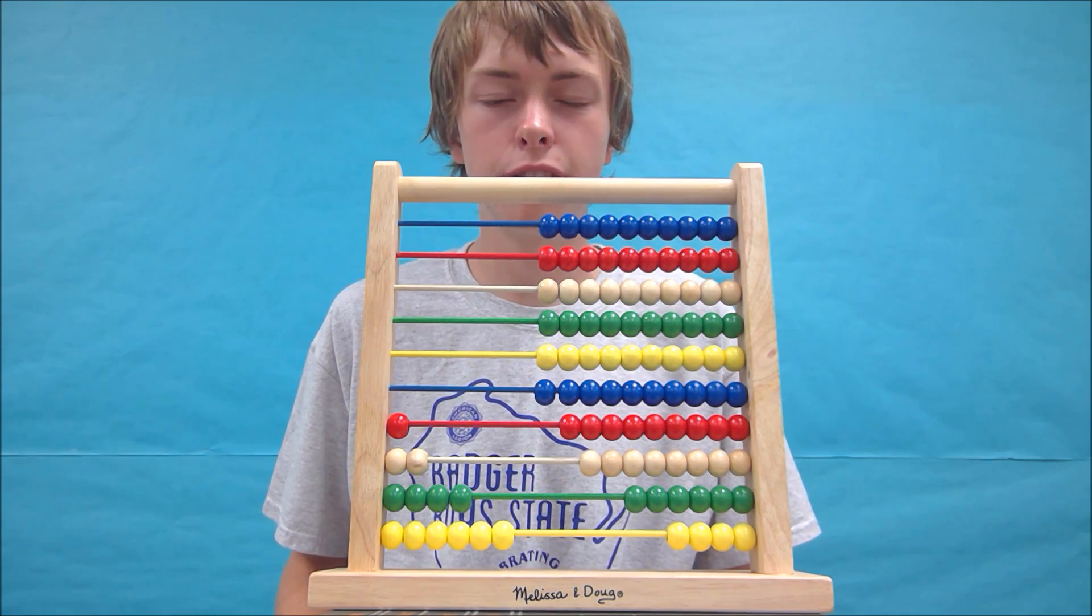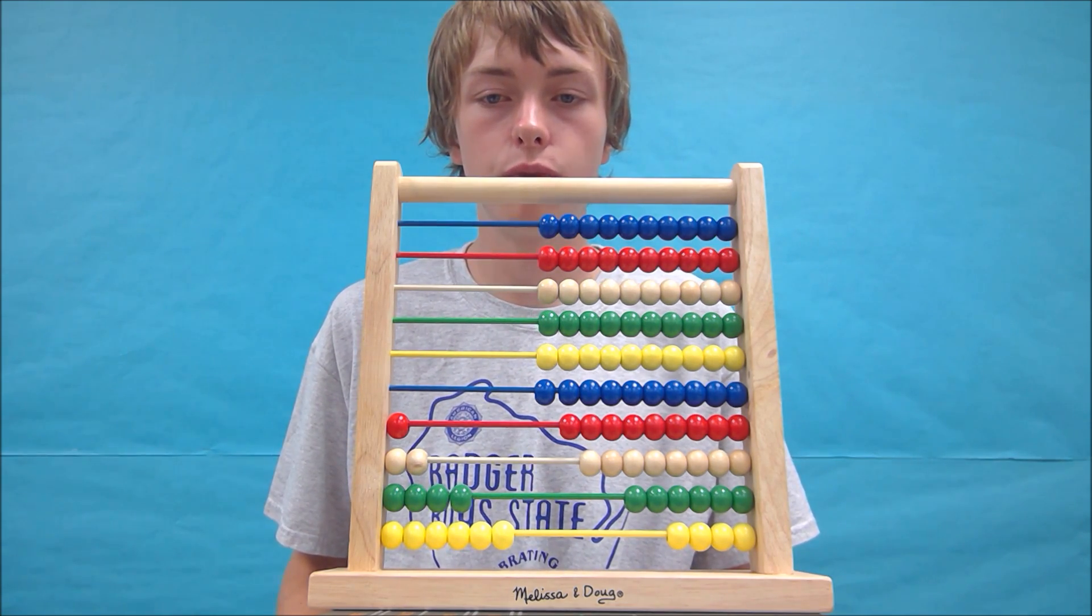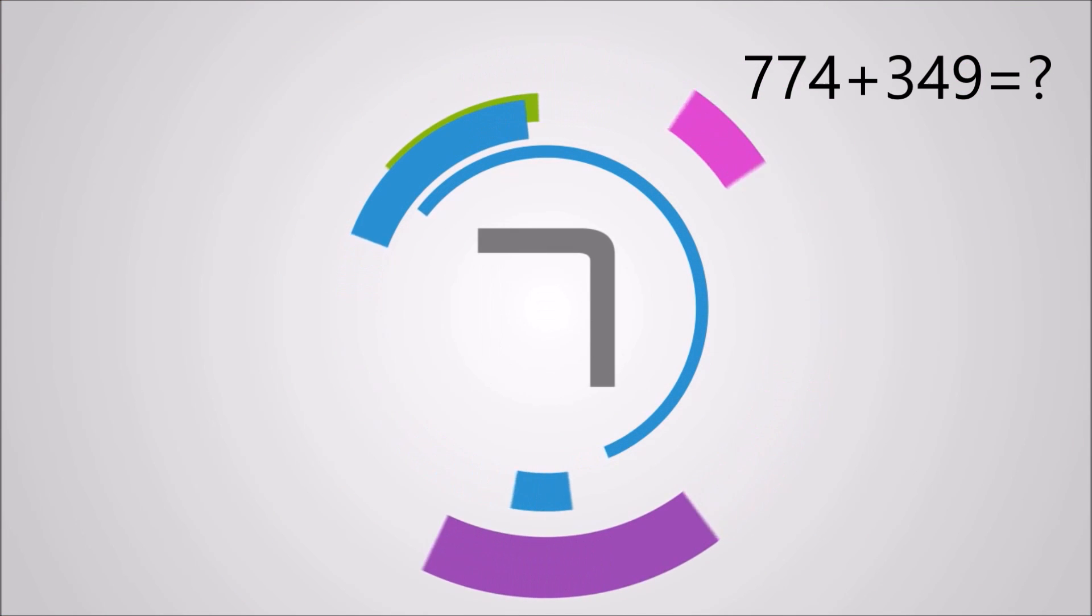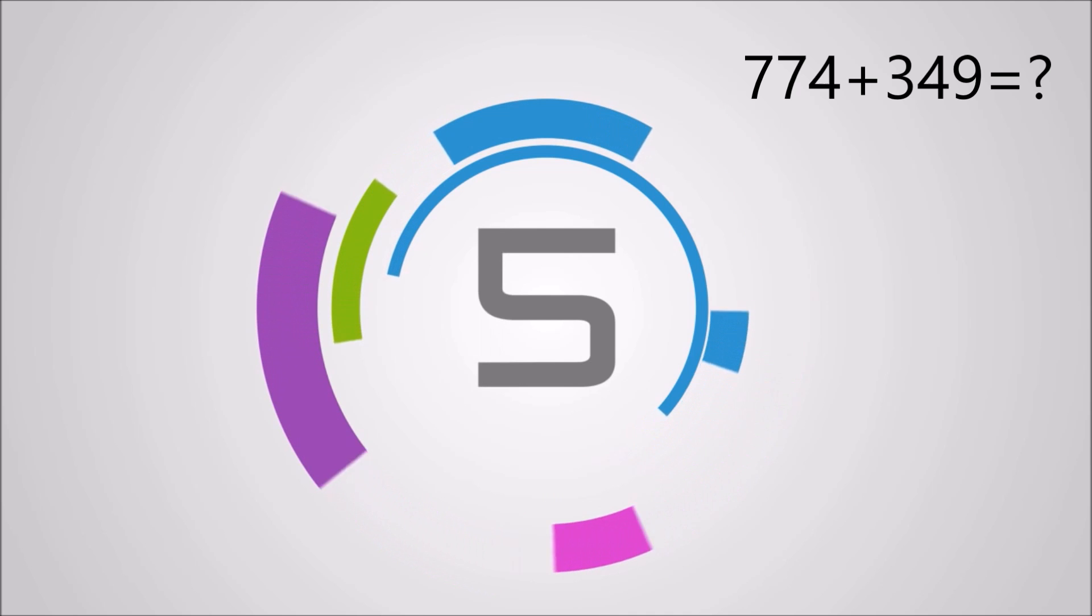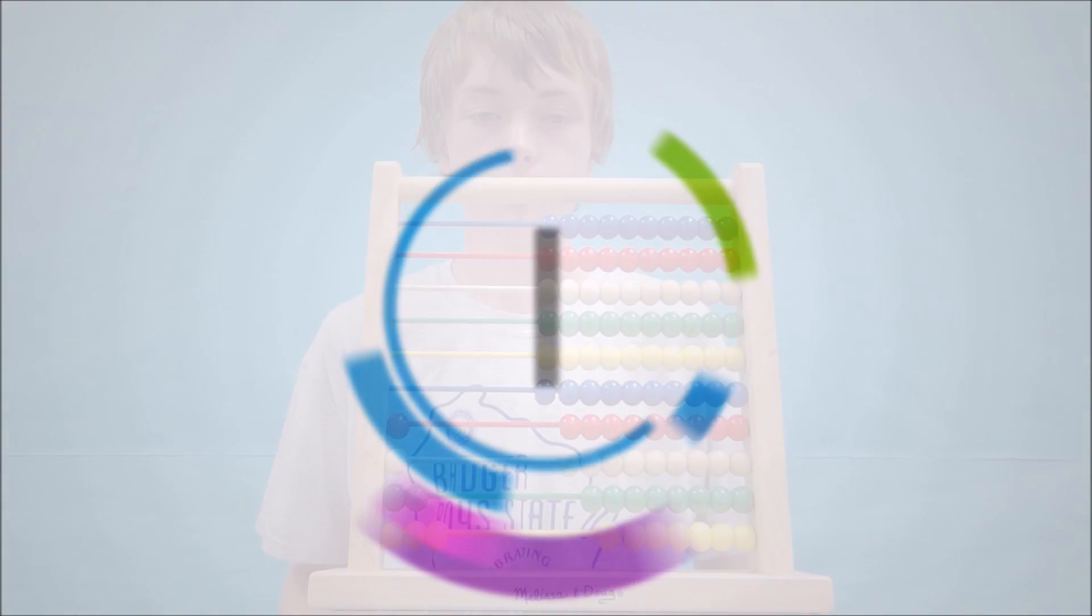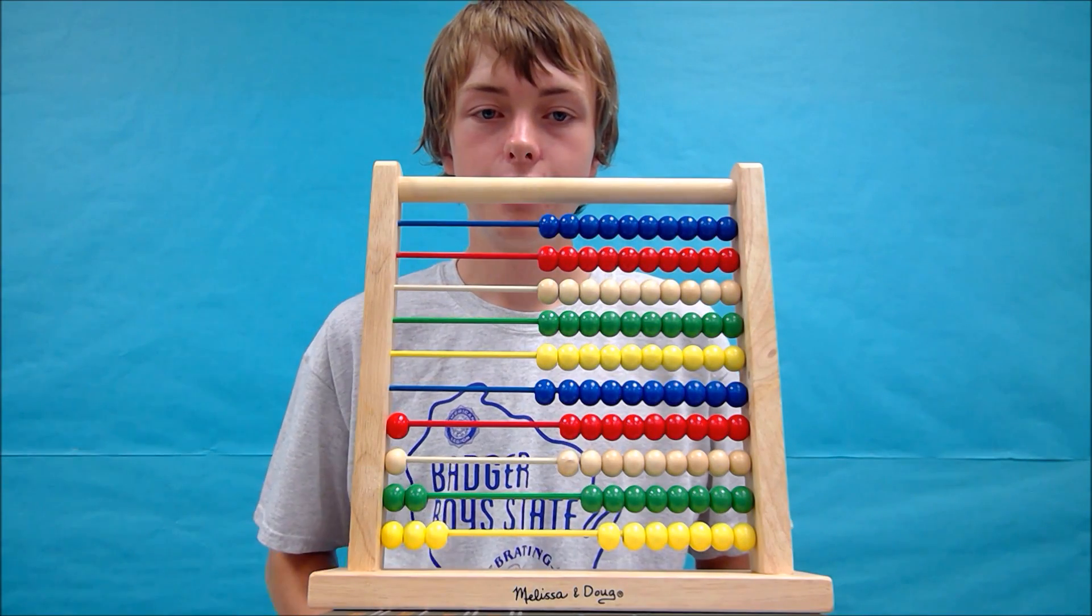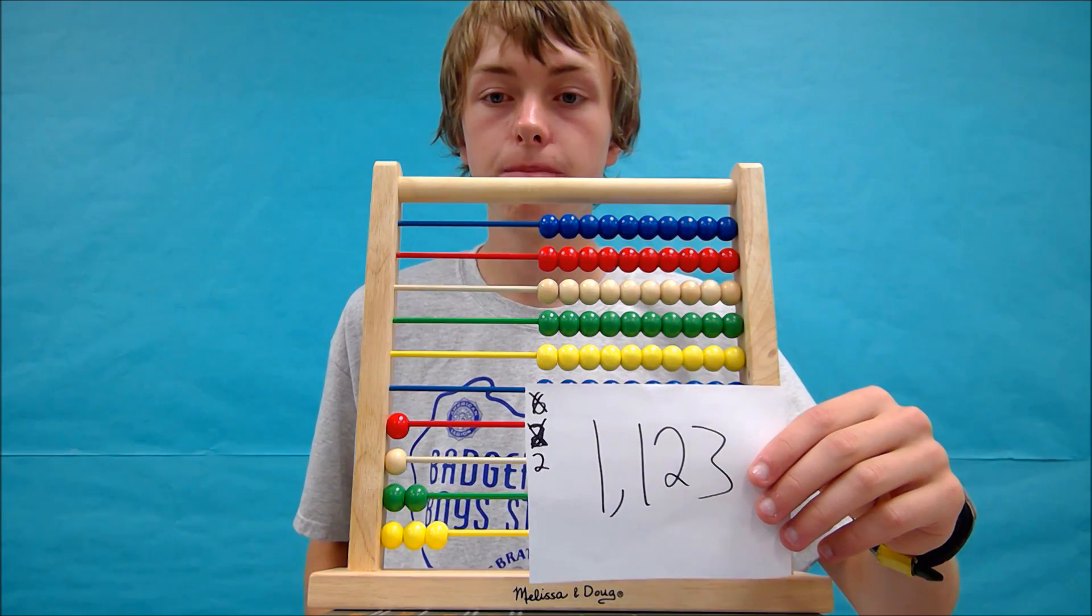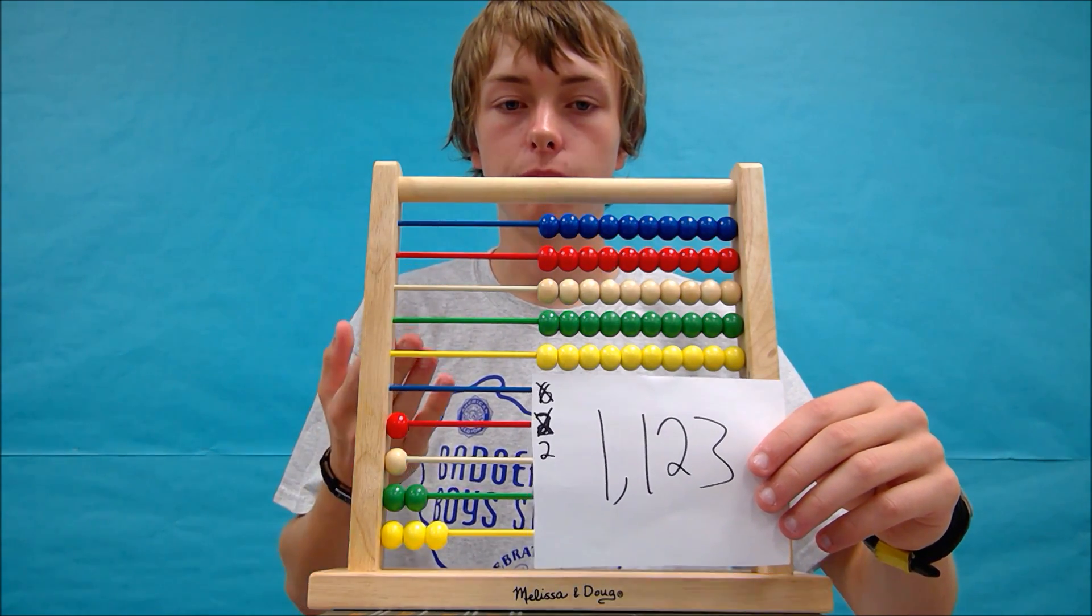Lastly, let's solve 774 plus 349. The answer you should get is 1123 and your abacus should look something like this.